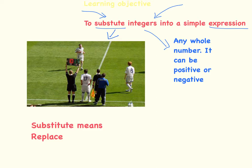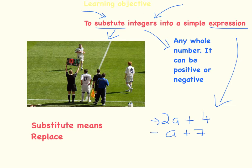And so what we're doing here is if we have an expression, an example of an expression would be say 2a plus 4 or a plus 7. These are all different expressions and they're expressions because they have a letter in them, they have an unknown. And substitute means we're going to replace that letter with an integer, with a number.